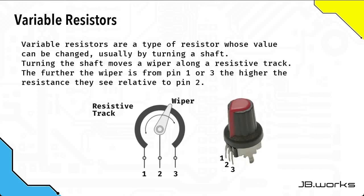But before we start building the circuit let's just have a quick look at the idea of variable resistors. A variable resistor is basically a resistor whose value can be changed and that's usually done by turning a shaft or a knob.